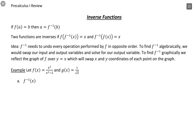Inverse functions switch our input and output values, and that changes the form of our function. To represent an inverse function: if our original function is f(a) = b, so a is the input and b is the output, we're switching it so that b is the input and a is the output. We take the original function name, f, and put a little negative one there that reads as 'inverse.'